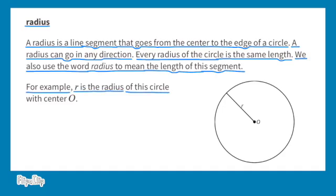For example, r is the radius of this circle with center O. Each of these line segments represent the radius for this circle, and each of these line segments are all the same length.